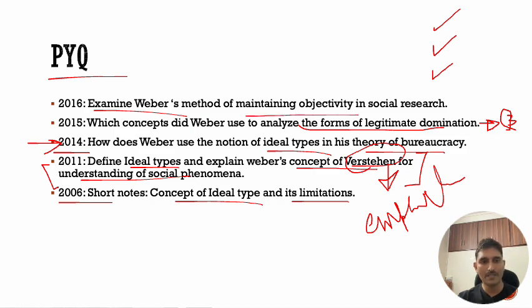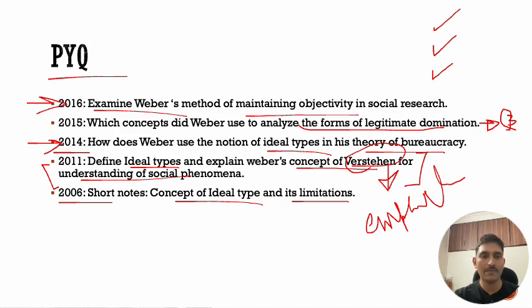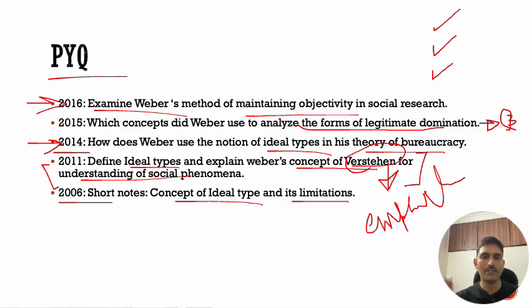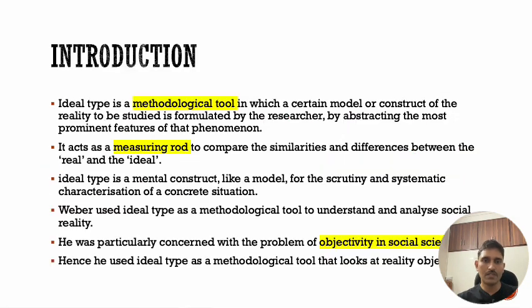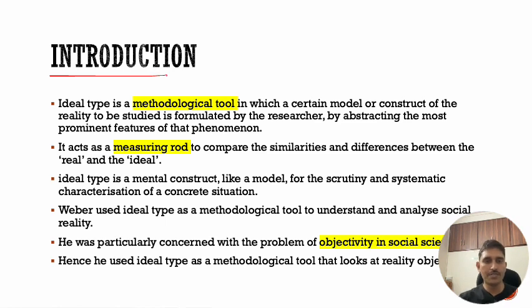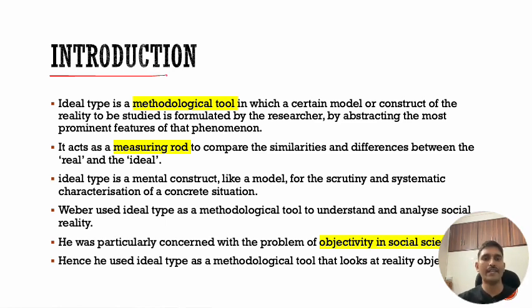The answer to that 2016 question is the method of ideal types and how it helps in achieving objectivity. So first of all, let us try to define ideal types — what are ideal types.